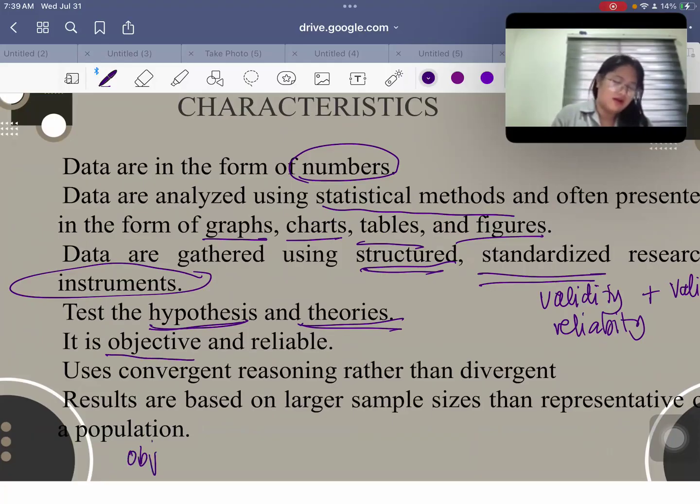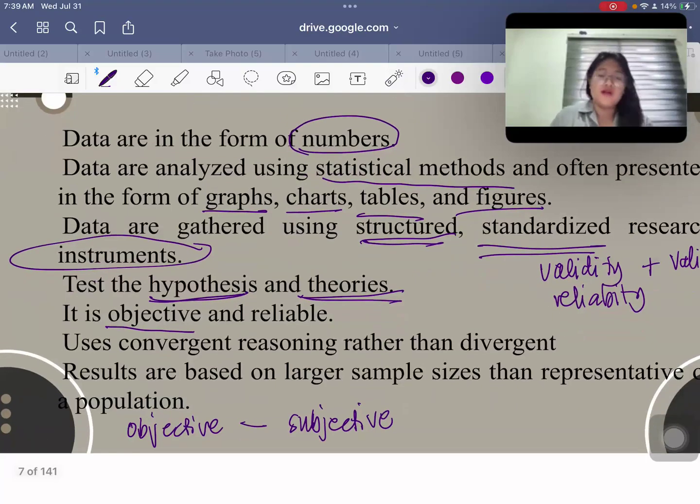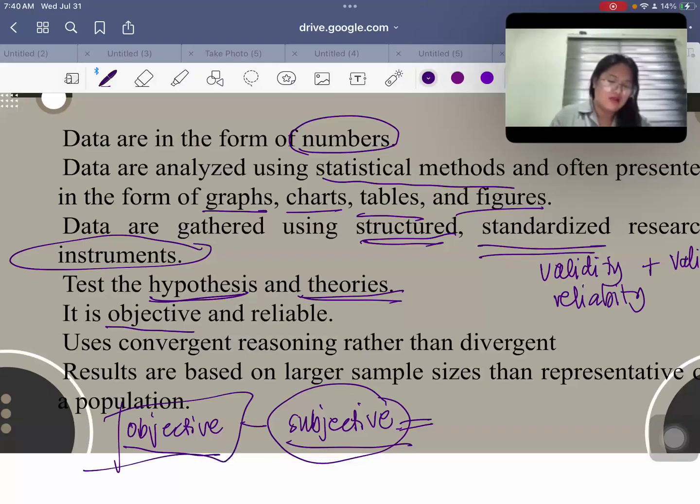So what's objective? So let's put the opposite of objective, which is subjective. Objective is impersonal. You're detached. You don't allow your feelings to intervene. Nothing personal. Subjective, on the other hand, is personal, opinionated, everything that comes from the person. So both of which are not negative. They are neutral terms. But of course, we know that subjectivity has no room for quantitative research since this has to be logical, objective, and based on numbers.